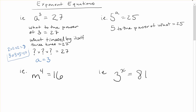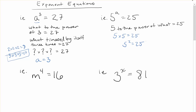If you just leave the working without stating the answer, that doesn't work — you need to state that a = 3. Now the other type of example is where instead of the base being the unknown, it's the exponent we don't know. In this problem, 5 to the power of a equals 25, so in words: 5 to the power of what equals 25? Trying it: 5 × 5 = 25, which is 5 to the power of 2, so the answer is a = 2.